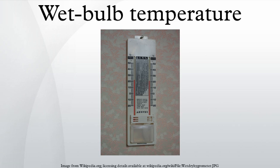An actual wet bulb thermometer reads a slightly different temperature than the thermodynamic wet bulb temperature, but they are very close in value. This is due to a coincidence — for a water-air system the psychrometric ratio happens to be close to 1, although for systems other than air and water they might not be close.